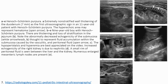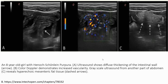Numerous and large mesenteric lymph nodes are present. This is a case of an eight-year-old girl with a hematoma. Image A shows thickening of the intestinal wall. Image B shows increased vascularity in the intramural portion. A grey-scale image from another part of the abdomen shows hyperechoic mesenteric fat tissue.